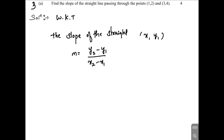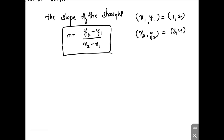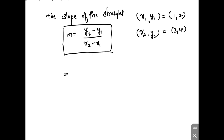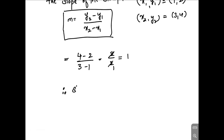Here x1, y1 is (1,2) and x2, y2 is (3,4). Substituting the values of x1, y1, x2, y2 in the formula: 4 minus 2 divided by 3 minus 1, which gives 2 by 2. We can cancel out, which gives 1. Therefore, the slope of the straight line is 1.